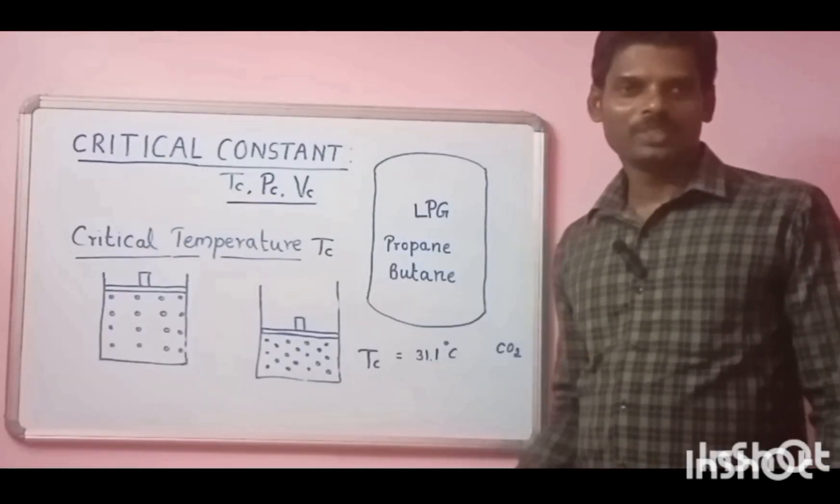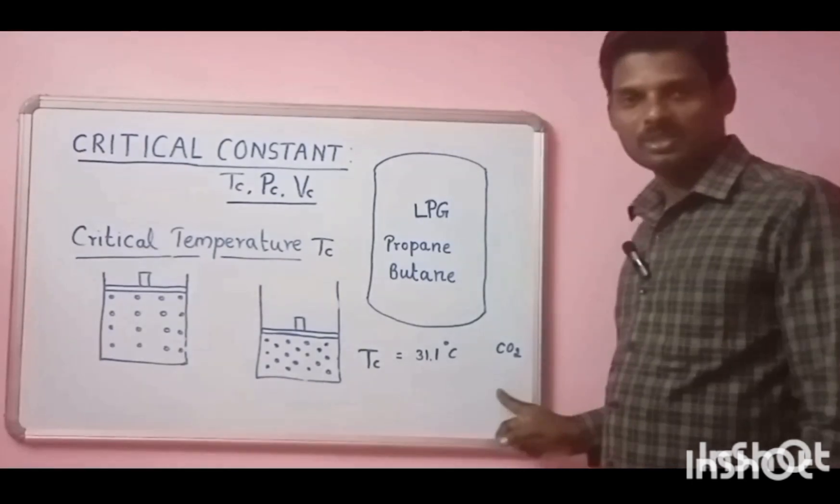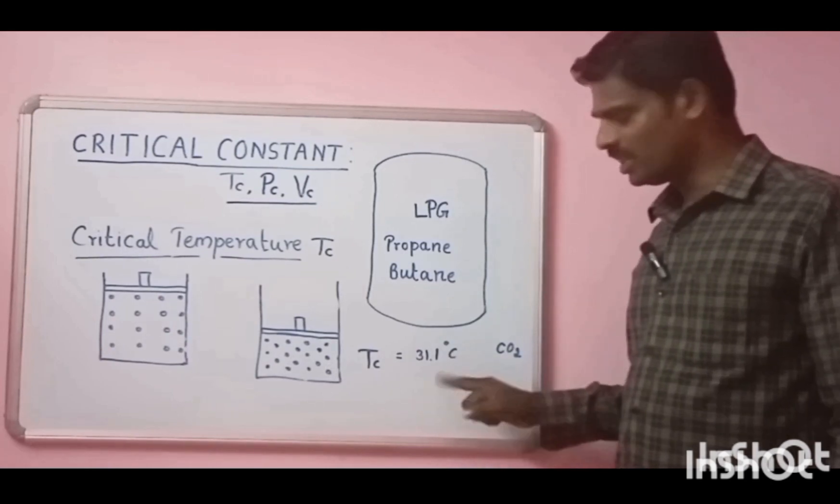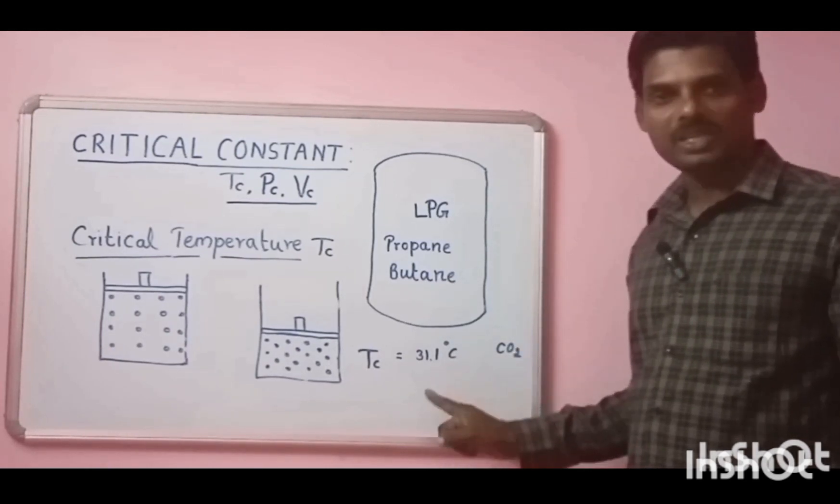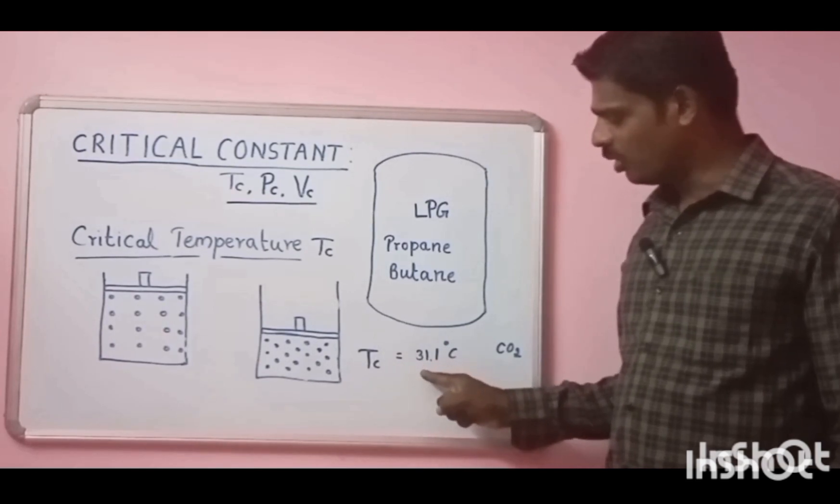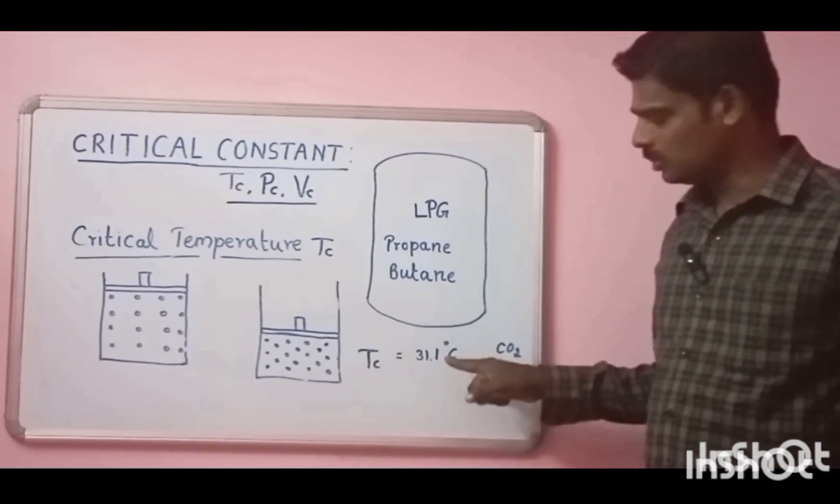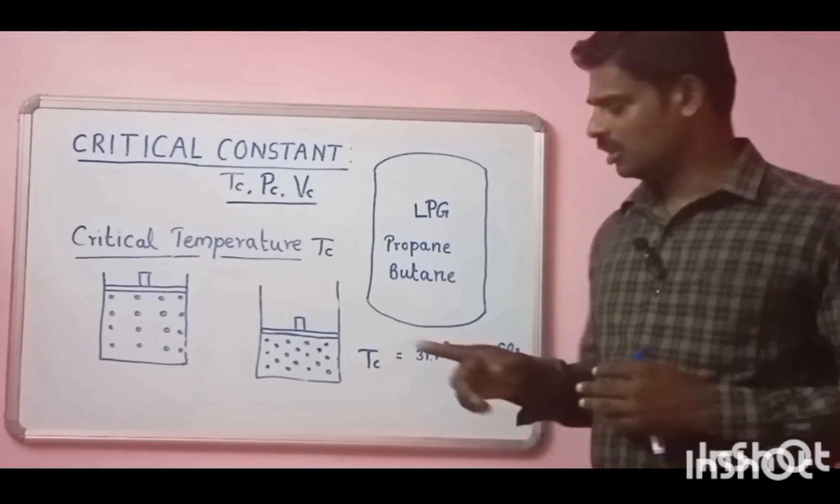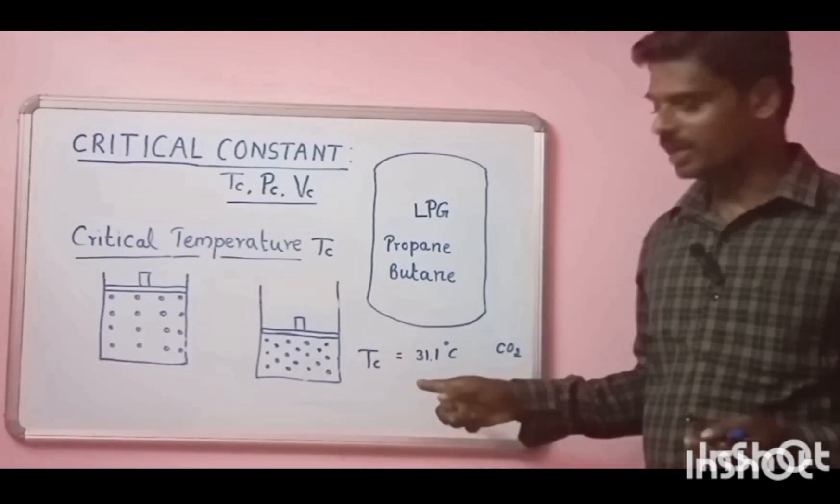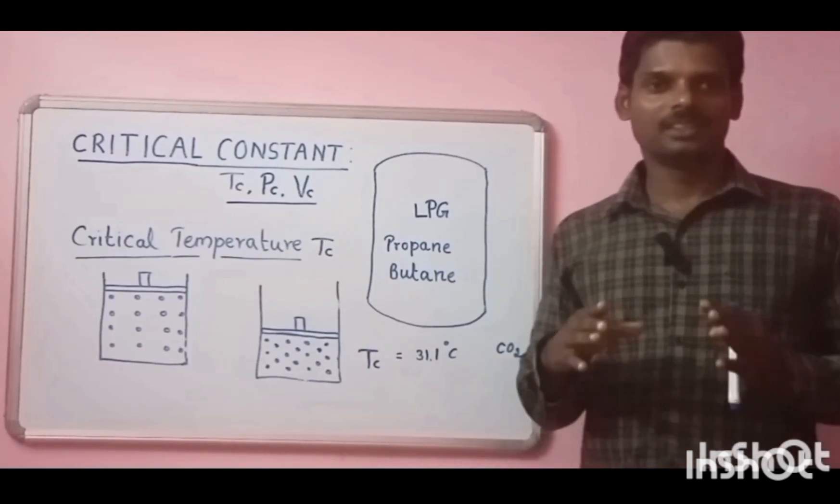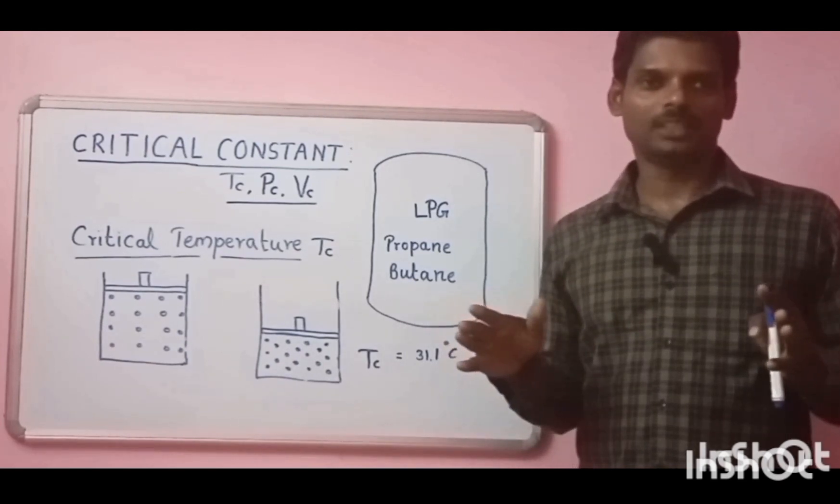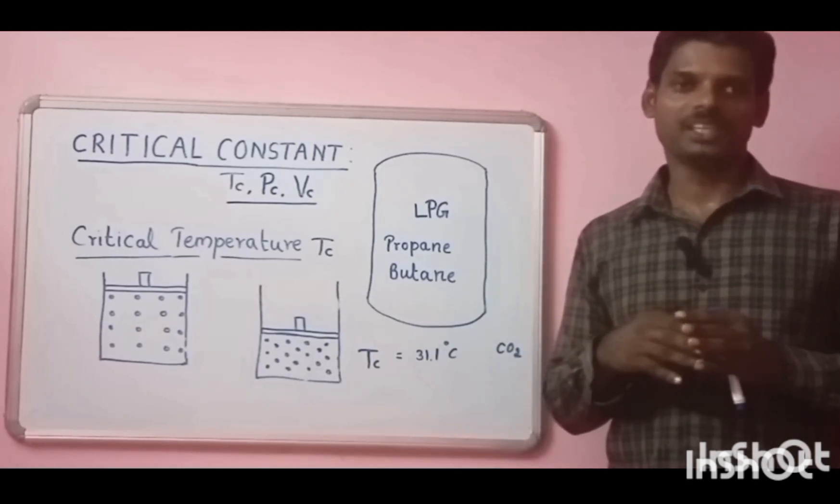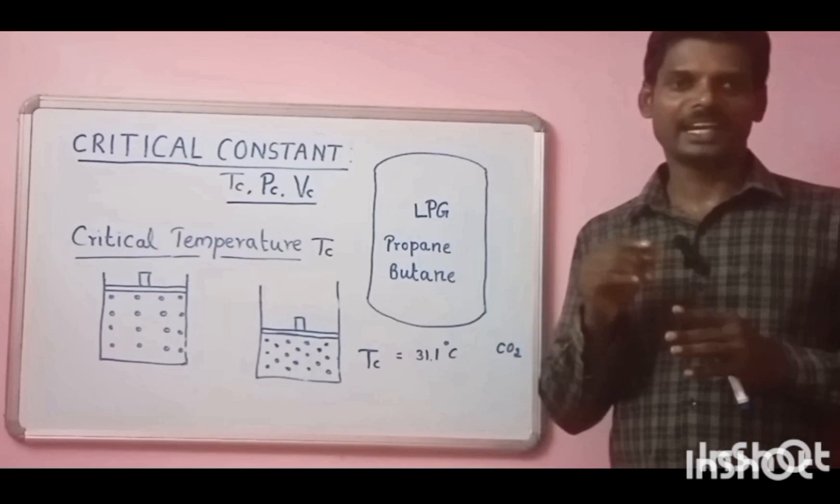Let us see with an example. For CO2, carbon dioxide, the critical temperature for carbon dioxide is 31.1 degrees Celsius. This means, above this temperature, 31.1 degrees Celsius, if you are increasing the pressure, but the temperature is more than this temperature, then the gas cannot be liquefied. At any pressure, even if it is 500 atmosphere pressure, then this carbon dioxide cannot be liquefied if it is above the critical temperature.